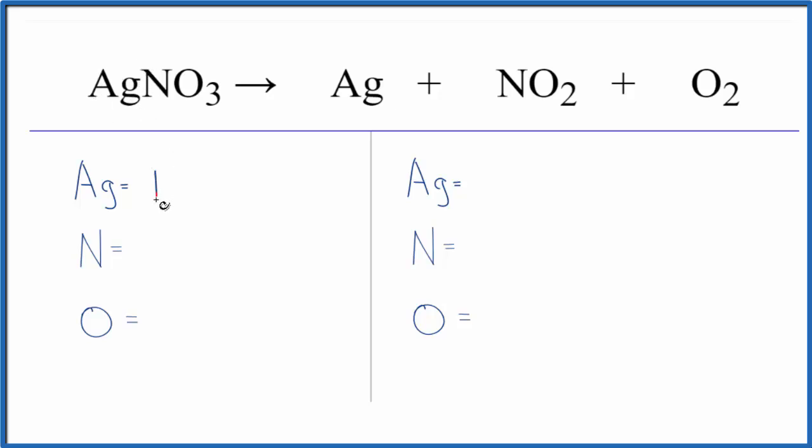Silver we have one of those, nitrogen one, and oxygen we have three. On the product side, we have just the one silver, we have one nitrogen, and we have two oxygens. Plus, you've got to count these two oxygens here. So we have a total of four oxygen atoms.